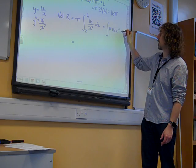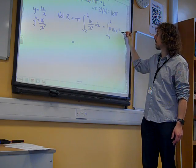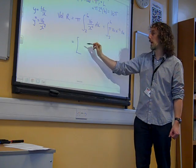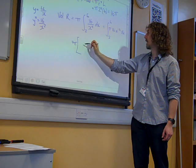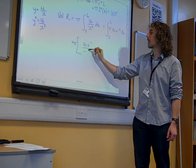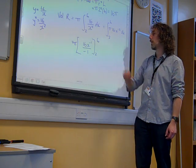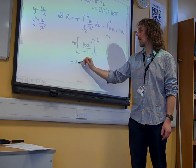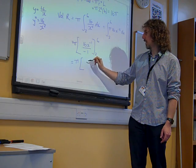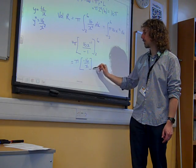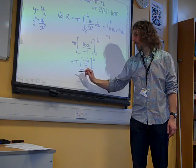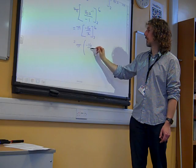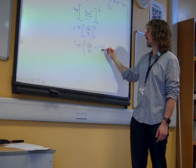pi times 16x to the minus 2. So, when we integrate that, we're going to add 1 to the power and divide by the new power. So, it's 16x to the minus 1 over minus 1 between the points 2 and 6. So, that is pi times minus 16 over x between 2 and 6. So, our volume is going to be minus 16 over 6, take away minus 16 over 2.